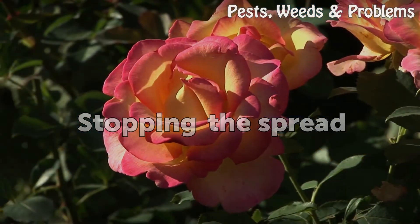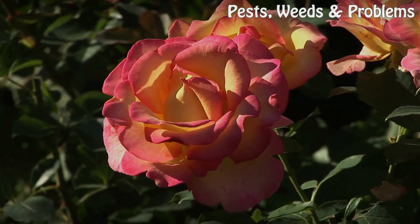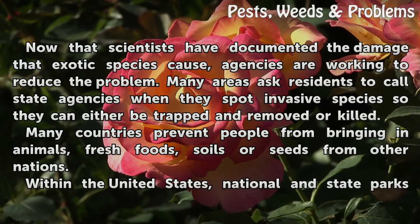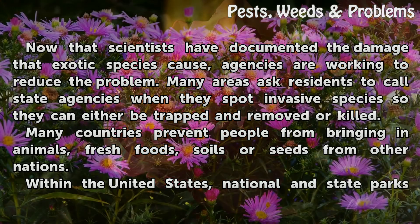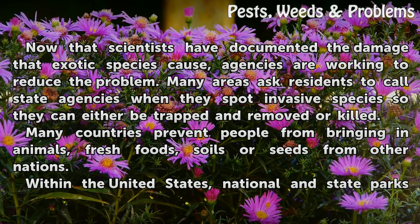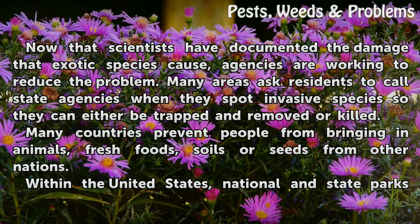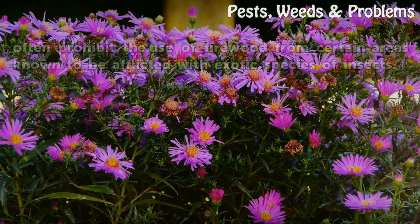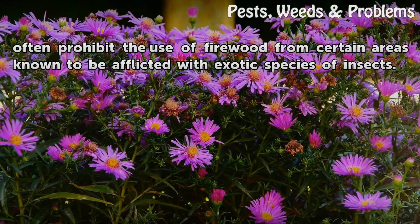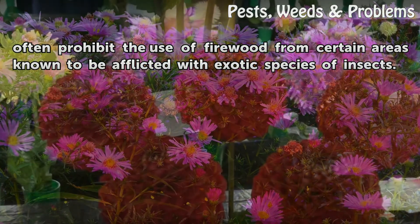Stopping the Spread. Now that scientists have documented the damage that exotic species cause, agencies are working to reduce the problem. Many areas ask residents to call state agencies when they spot invasive species so they can either be trapped and removed or killed. Many countries prevent people from bringing in animals, fresh foods, soils or seeds from other nations. Within the United States, national and state parks often prohibit the use of firewood from certain areas known to be afflicted with exotic species of insects.